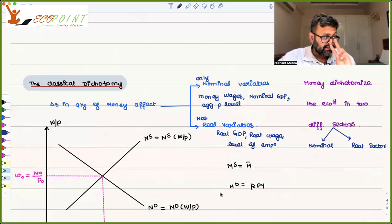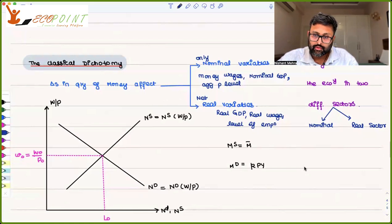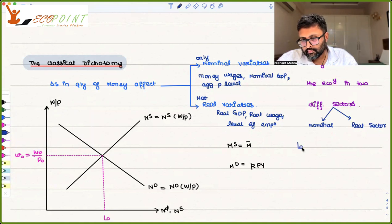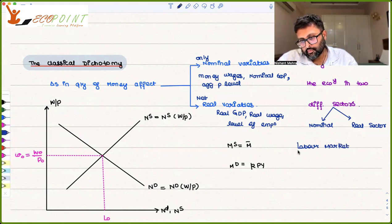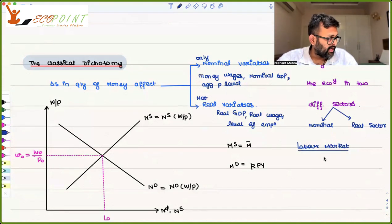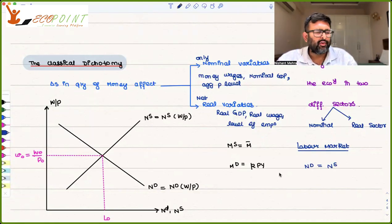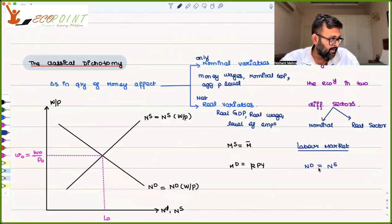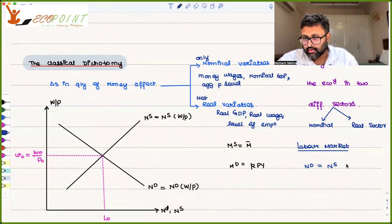There are three markets working here. One is the labor market. When you say labor market, you mean demand for labor equals supply for labor. And this equality is ensured by flexible wages.